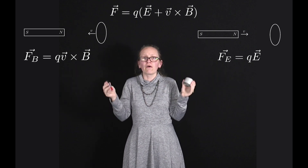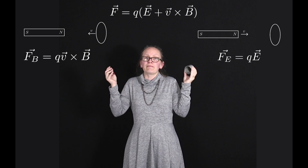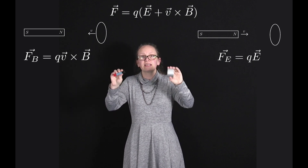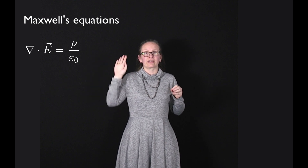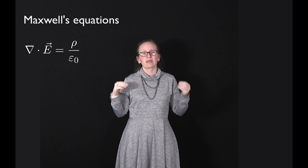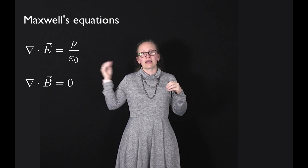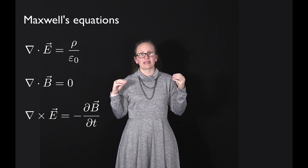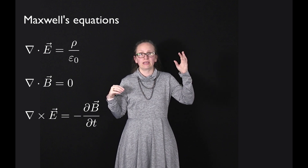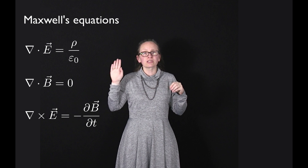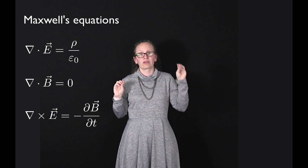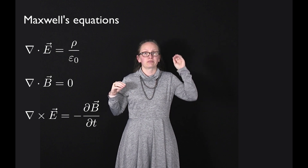As you go on in physics you'll learn about relativity and how to use it within electromagnetism. You'll also continue to learn about Maxwell's equations. In differential form these can be written as: del dot E equals rho divided by epsilon naught; del dot B equals zero; del cross E equals minus the partial derivative of B with respect to t; and del cross B equals mu naught J plus one over c squared times the partial derivative of E with respect to t.